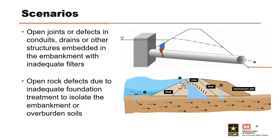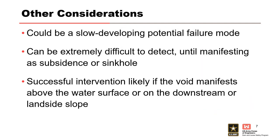Internal migration can also occur if there are open joints or defects in conduits, drains, or other structures that are not filtered, or if there are untreated rock defects in the foundation. Voids or sinkholes can form upstream, within the central portion of the dam, or on the downstream shell. The most critical location is beneath the impounded water, as this leads to potential introduction of full hydraulic head to a more downstream location. Internal migration into rock defects is most common for USACE dams, whereas migration into conduit defects is most common for USACE levees. This failure mode can develop very slowly, is difficult to detect until the void reaches the surface, and successful intervention is likely if the void forms above the water or on the downstream slope.